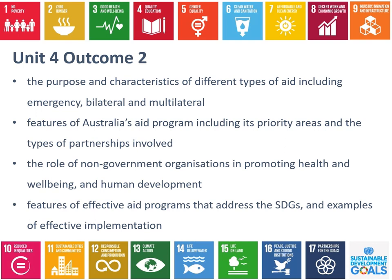In our last lesson, we looked at different types of aid, particularly emergency or humanitarian aid, bilateral aid, which is aid given from a donor country to a recipient country, and then multilateral aid, which is when governments give money to large international organisations like the United Nations or UNICEF, and then those organisations carry out aid activities. We also looked specifically at Australia's aid program and its priority areas and partnerships.